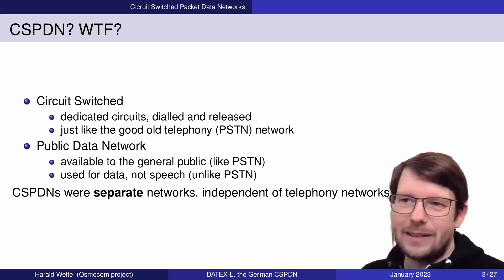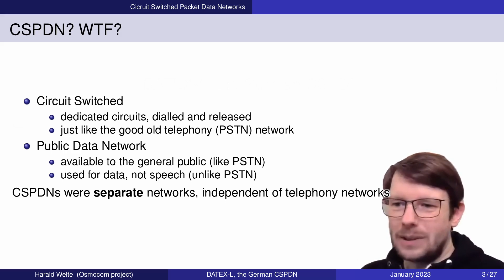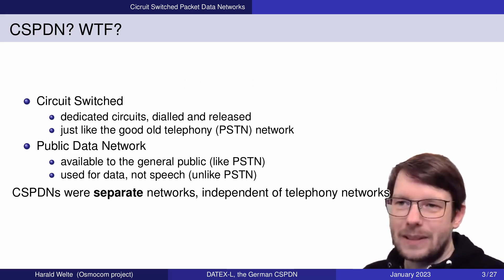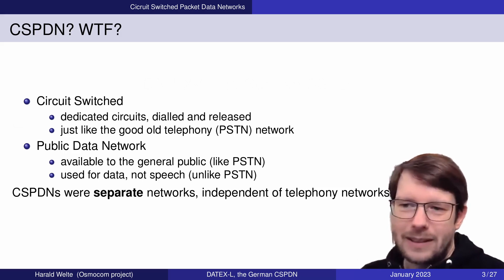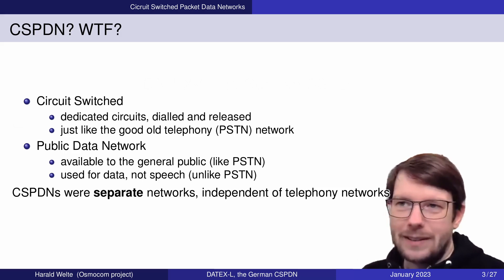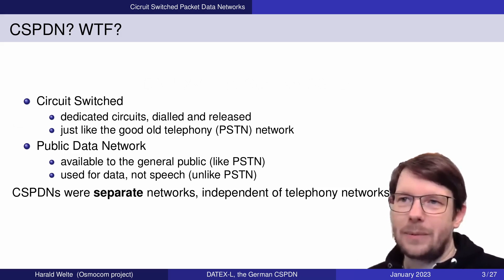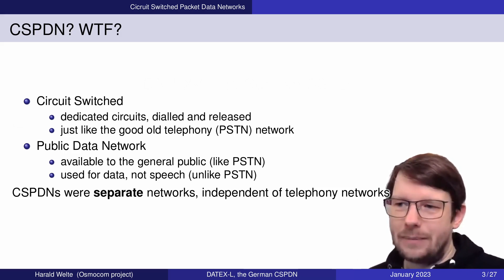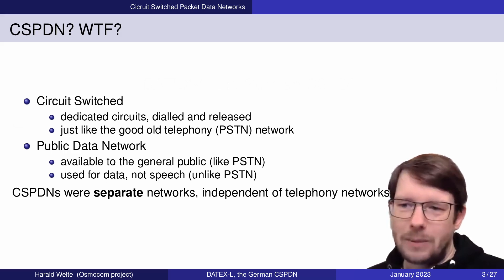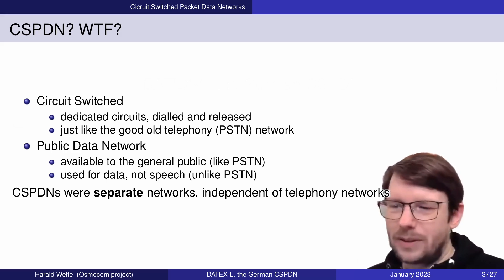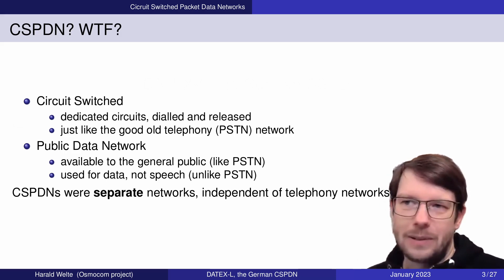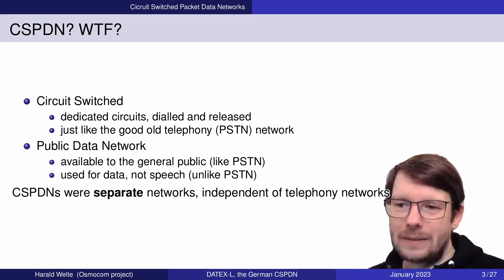For example, in the early days it existed in parallel to the telex network — teletype-kind devices — and also at the end in parallel to the ISDN network. Independent means separate infrastructure, separate switches. The only part that may have been reused is some of the cables that already existed, either in the backbone or in the subscriber line, but with separate switches.